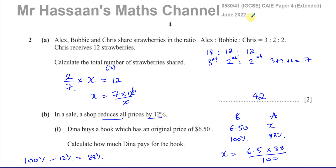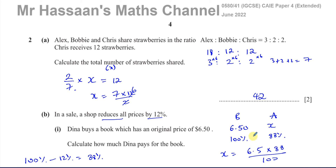That completes question 2 from the June 2022 paper 4 variant 1, Cambridge 0580 extended exam. Other questions from this paper can be found in the playlist linked here. Questions on ratios and percentages from my IGCSE work are in separate playlists for percentages and ratios. You can subscribe to the channel by clicking the link. Thanks for watching and see you soon.